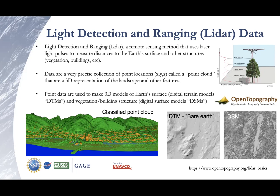The data collected are collectively called the point cloud, which are basically a collection of X, Y, and Z locations. These can be used to make 3D representations of the landscape or other features. Down here at the bottom are examples of what the point cloud would look like — a very high density of points, on the order of tens to hundreds of millions within this one image. These data can then be gridded to create digital terrain models or digital surface models, which represent the surface including vegetation and other structures.